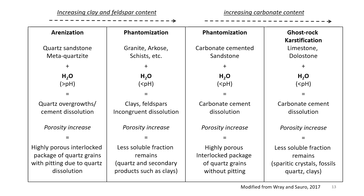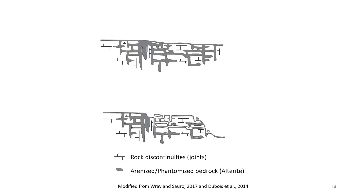As you get into more carbonate-rich rocks, you get a process known as ghost rock karstification. In ghost rock karstification, you get carbonate cement dissolution, but you still have less soluble fraction remaining. This less soluble fraction can include sporadic crystals, fossils, quartz, or clays. Here's the model created by Rain Sorrow and Boyd et al., where you have bedrock and discontinuities such as joints in the bedrock, which allow water to get into the rock and dissolve the cement. Then later on, erosion allows the water to flow out of the bedrock and rinse out these remaining sand grains or clays.